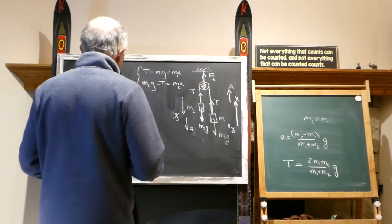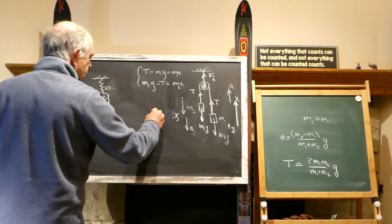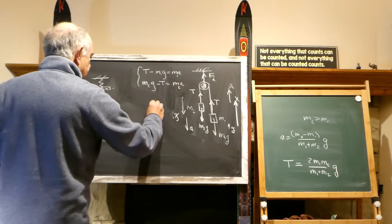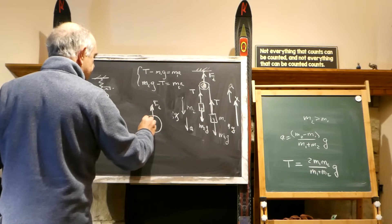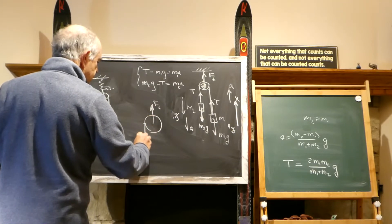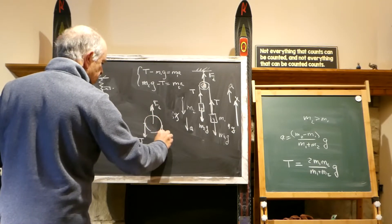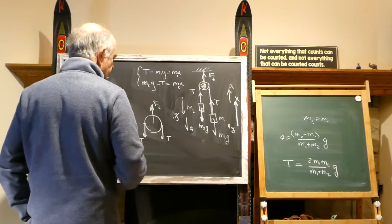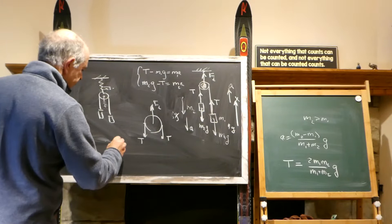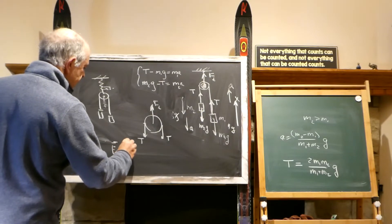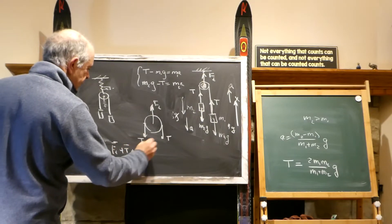But the solution here is very simple. We have the block. Block has this F tangent up, and this rope pulls down T, and this pulls down T, and we have F tangent plus T. This T plus this T,